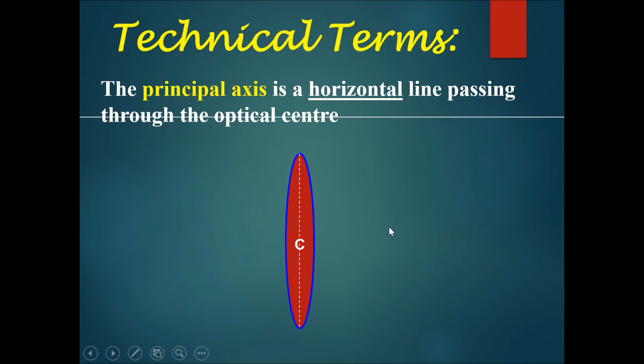The next one is called the principal axis. It is a horizontal line passing through the optical center. Make sure that this is at right angles to the lens.